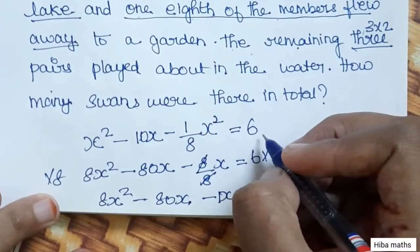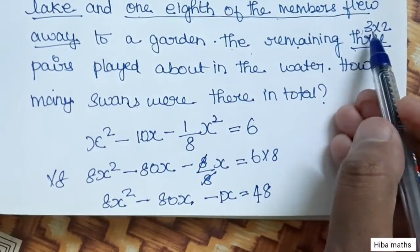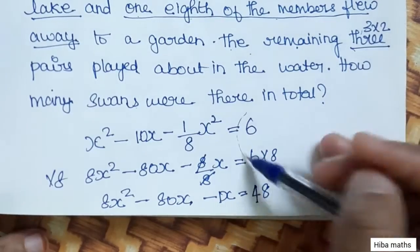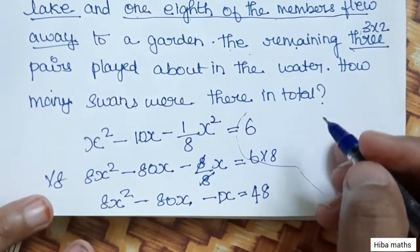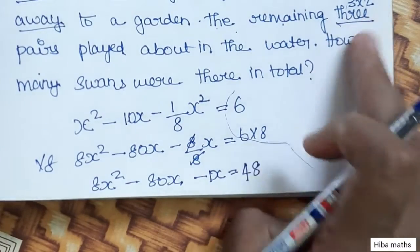The remaining is equal to 3 pairs. 3 pairs is equal to 3 into 2, which equals 6. So the remaining swans equal 6.